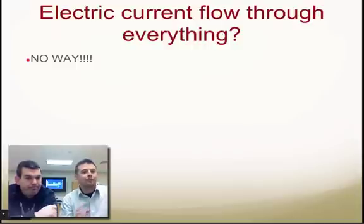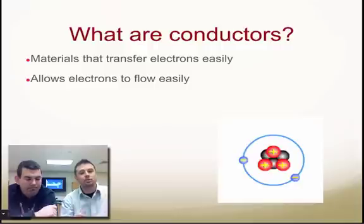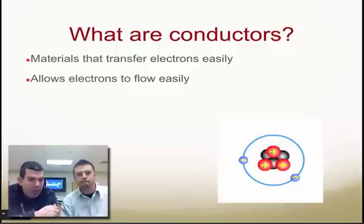Electric current cannot flow through everything. Absolutely not. There are some things that it can, like conductors. Conductors let electrons go through them easily. They just let electrons go through them easily.